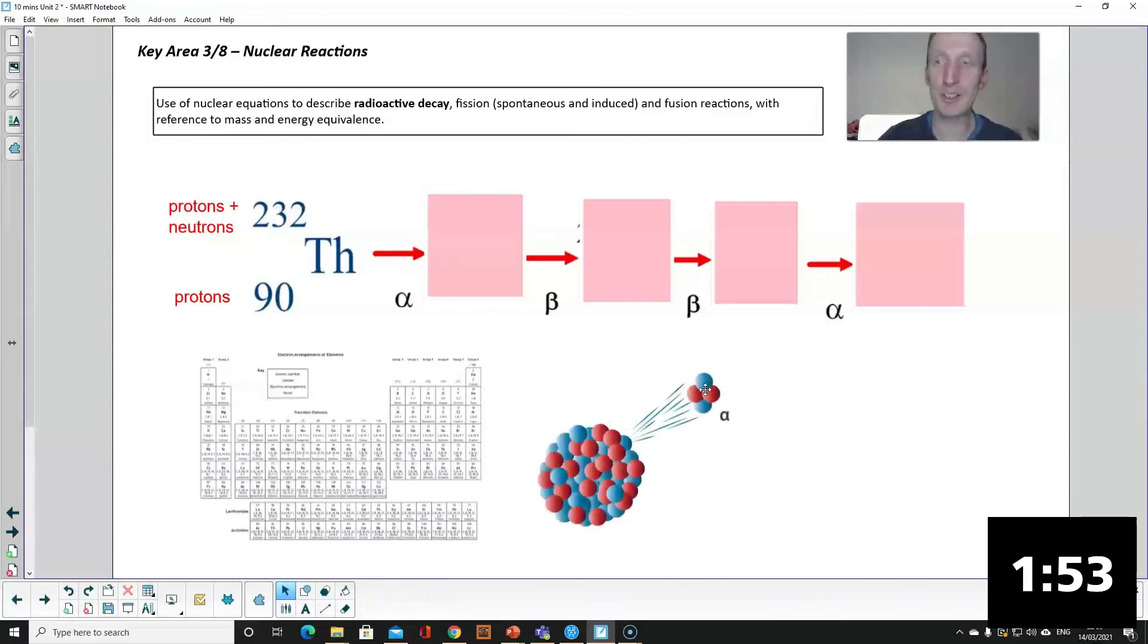The number at the top is the mass number that's the combined protons and neutrons in the nucleus and for alpha radiation you lose two protons and two neutrons so that means your top number goes down by four your bottom number goes down by two and you get a new element.